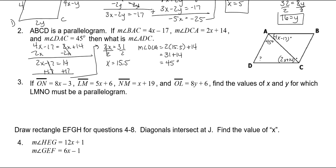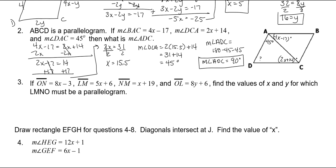To figure out the measure of angle ADC, you do 180 minus both of those 45s. So the measure of angle ADC is equal to 90 degrees. This parallelogram is actually either a rectangle or a square, because all of the corner angles are 90 degrees.